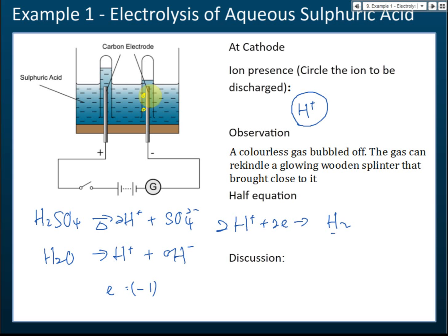The observation is: a colorless gas bubbles off. You cannot write 'hydrogen gas is released' because you can't see hydrogen gas. When you see the gas, you only see a colorless gas — you don't know if it's hydrogen, oxygen, or nitrogen. So you write: a colorless gas bubbles off.